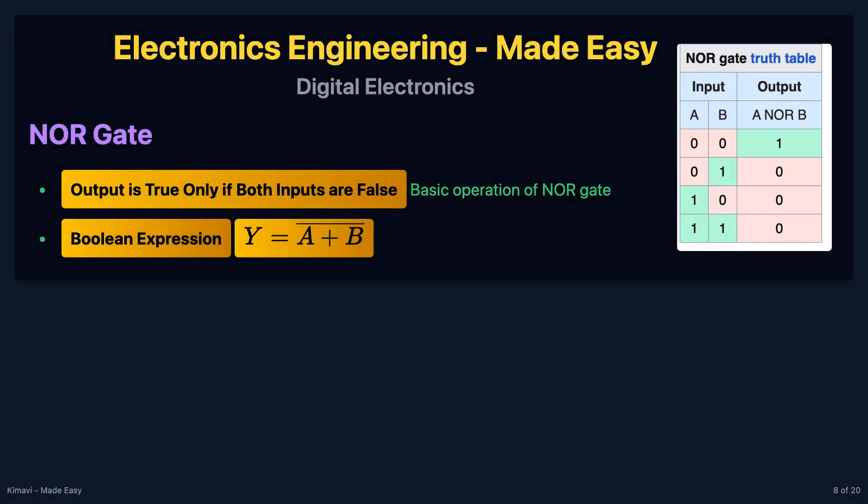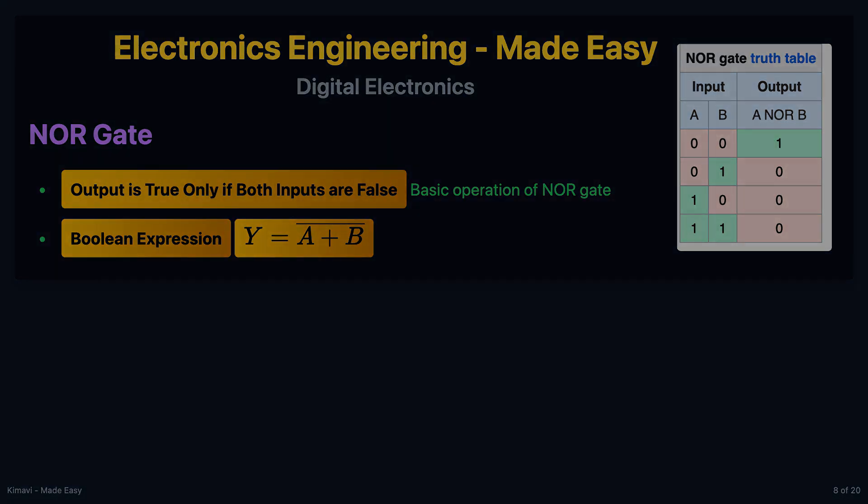The NOR gate outputs true only if both inputs are false. The boolean expression for a NOR gate is y = $\overline{a + b}$, where the overline represents the NOT operation applied to the OR operation.